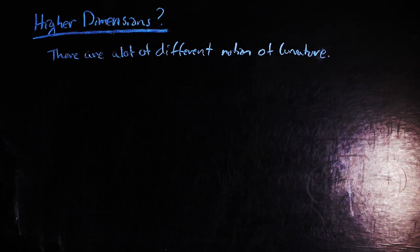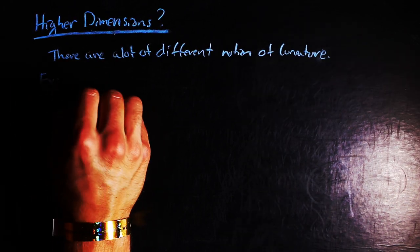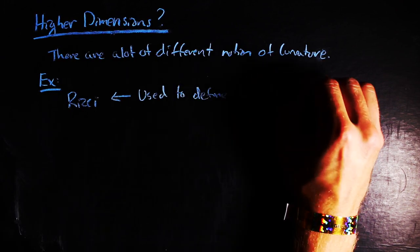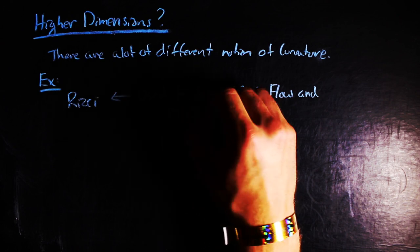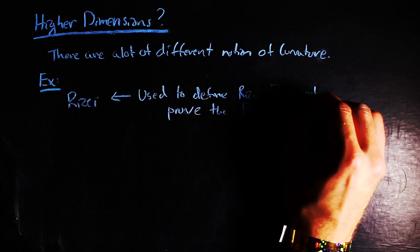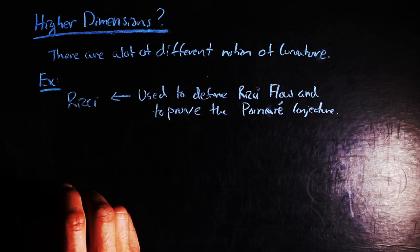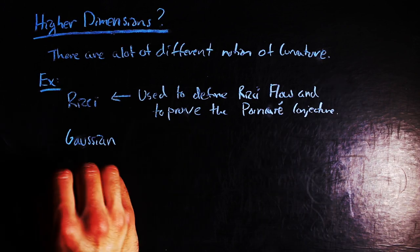One such curvature is the Ricci curvature, or Rizzi curvature. I think it's Italian, so Rizzi sounds sort of better. I'm not sure. Anyway, the Rizzi curvature is used to define Rizzi flow, which was used to produce the tools necessary to prove the Poincaré conjecture.